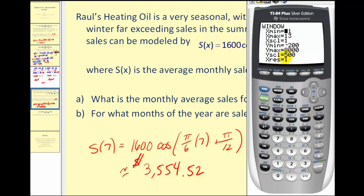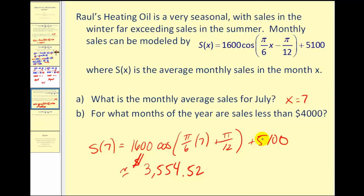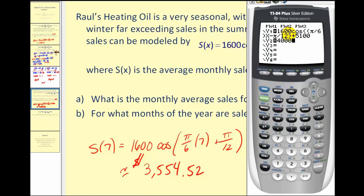Next, I already typed in the function into y one. And then in y two, we're going to type in four thousand dollars, because we want to know in which months the sales are less than four thousand dollars. So we want to see when y one is below y two.